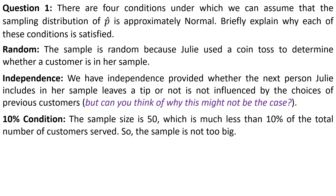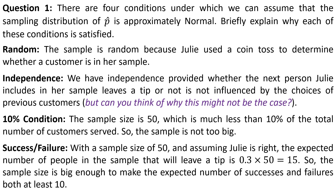The 10% condition is very easy. The sample size is 50, which is much less than 10% of the total number of customers, so the sample is not too big. The sample is also big enough. If the probability that a customer leaves a tip is 30% as supposed under the null hypothesis, then we can expect to see 15 customers who leave a tip out of a sample of 50, and 35 will not leave a tip. Both of those numbers are bigger than 10, so the success-failure condition is satisfied.